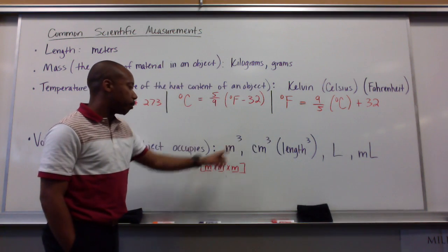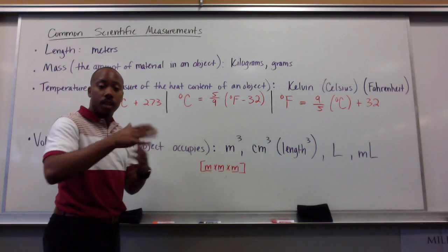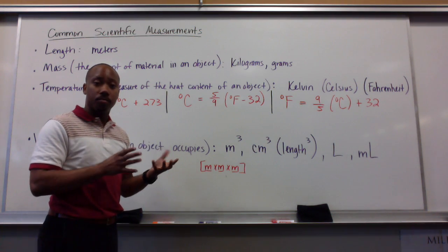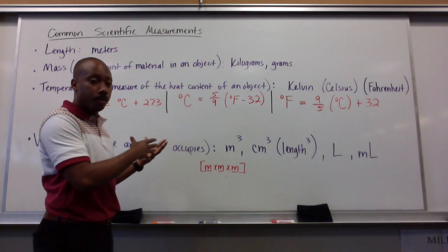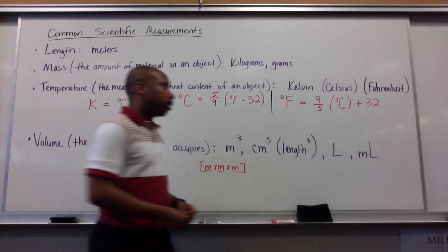This cubic meter comes from meter times meter times meter. So the dimensions of a three-dimensional object, length times width times height, is the volume. Meter times meter times meter, that's why it's cubed.